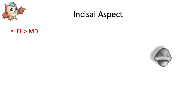Any anterior mandibular tooth is going to be wider facial-lingually than mesiodistally — so FL is greater than MD — which is the exact opposite of the maxillary arch, where the mesiodistal dimension was greater than the facial-lingual dimension.